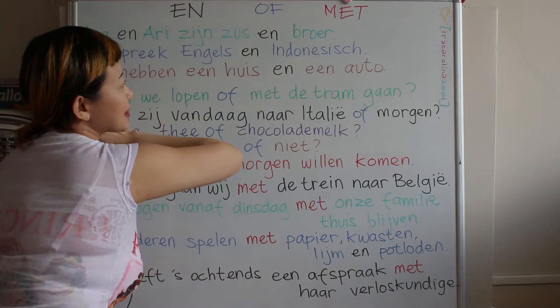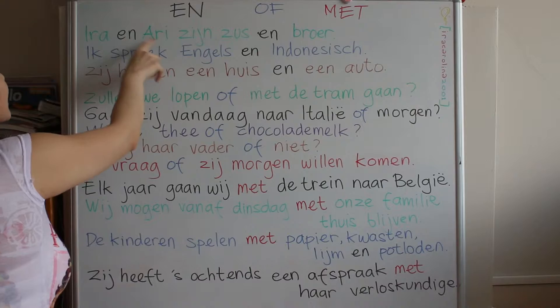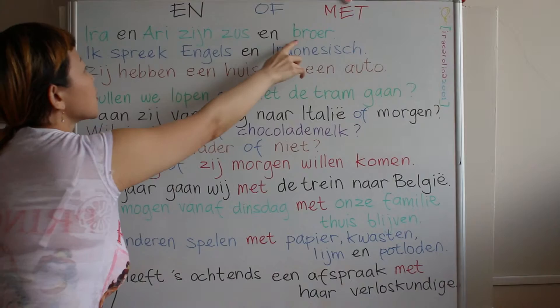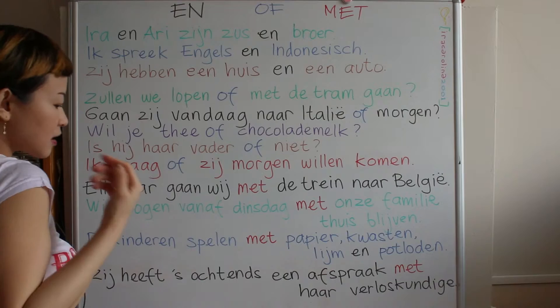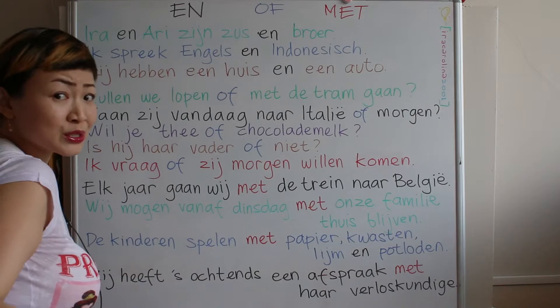Let's start. The names Ira and Ari — 'zus' and 'broer' mean sister and brother. In Dutch or Netherlands, we don't have a word for siblings. We just say sister and brother, or brothers, or sisters, instead of siblings, because there's no word for that.